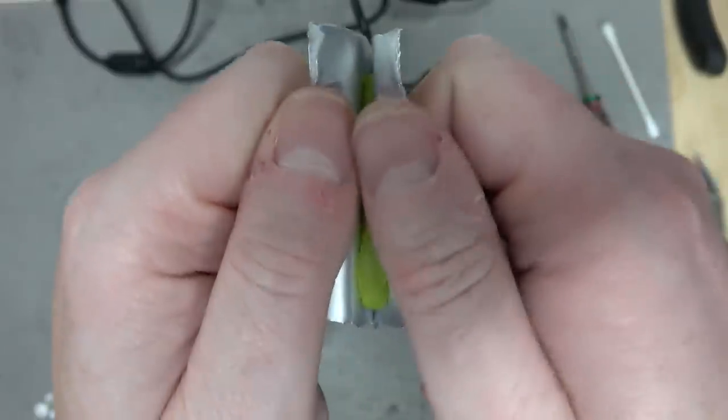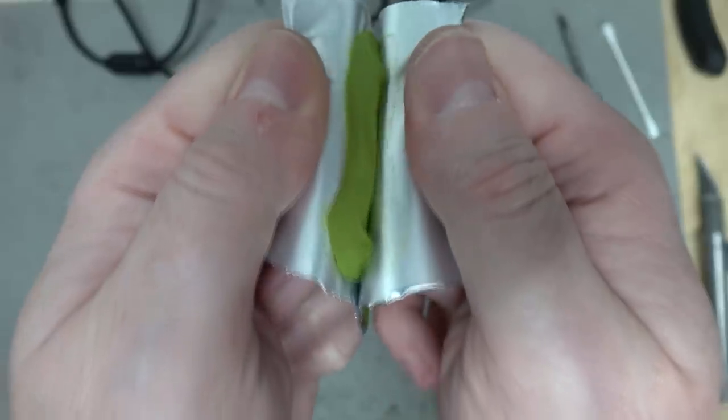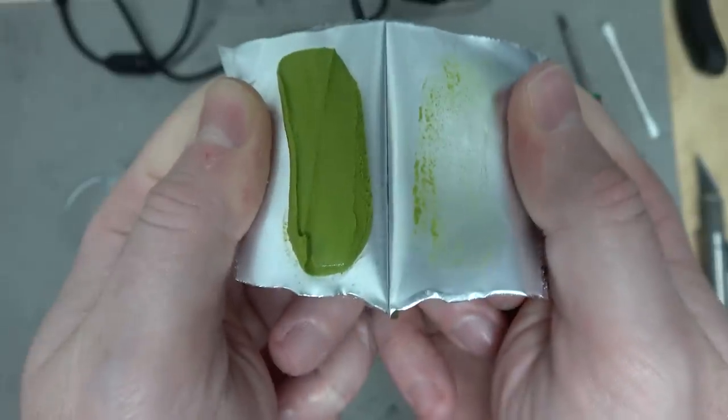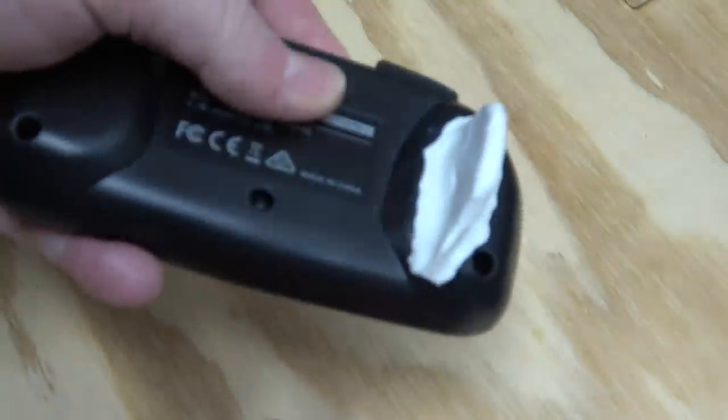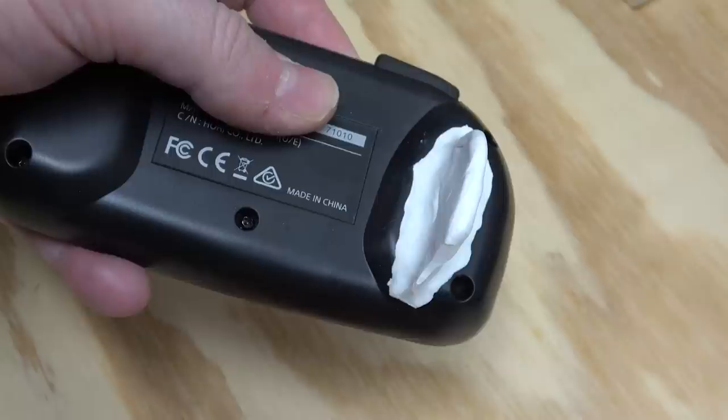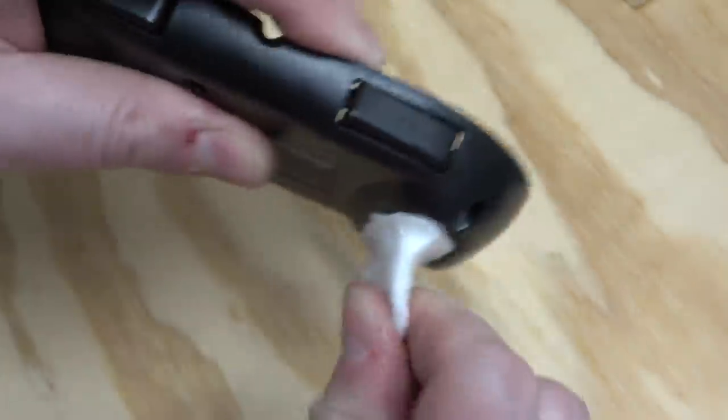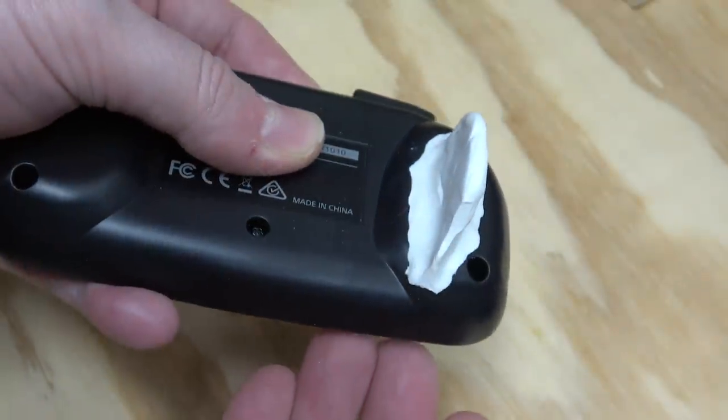Once it's removed from the sealed pack, you have 30 minutes of working time to fix, build, and create whatever you need. After 24 hours, Sugru cures into a strong and durable silicone rubber. It's flexible and electrically insulating, making it perfect for these kinds of projects.